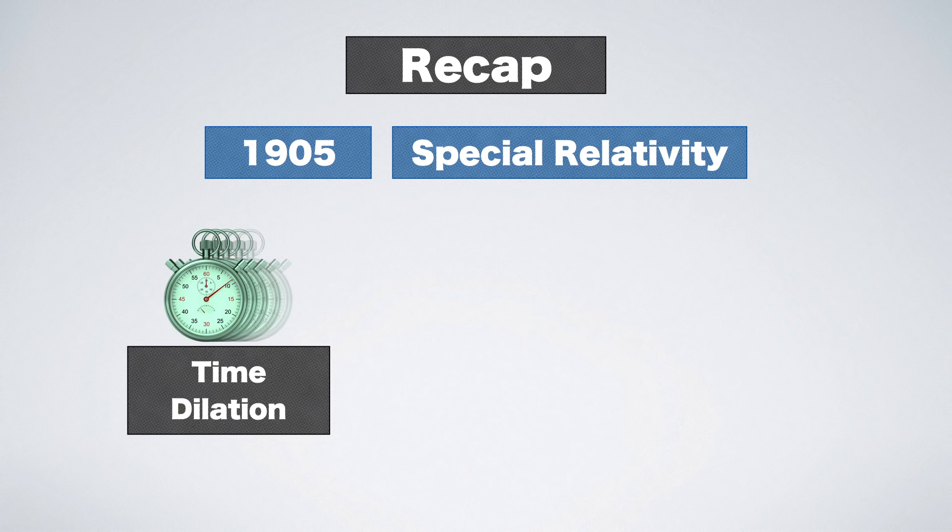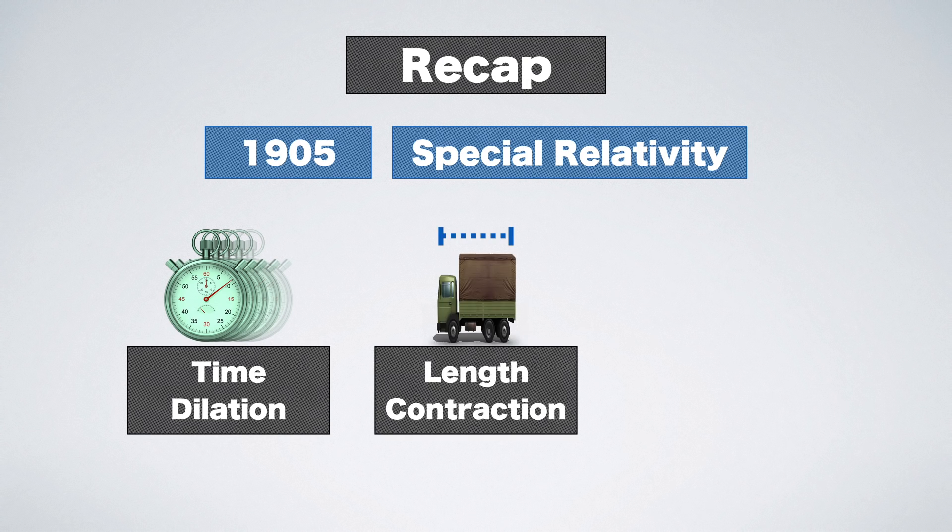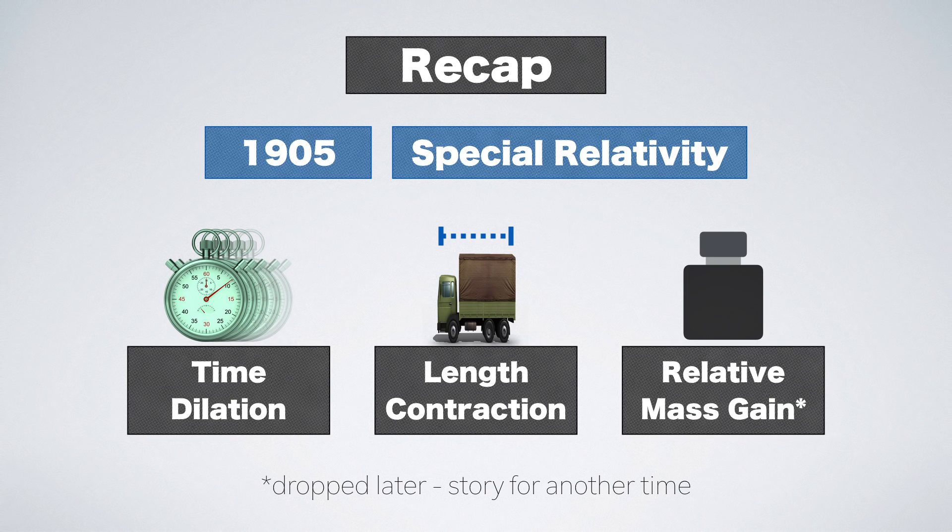First, time dilation, or moving clocks run slower. Second, length contraction, or moving bodies shrink. Third, relative mass gain, or moving bodies are heavier.